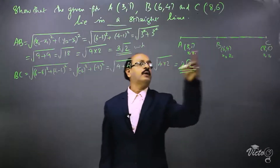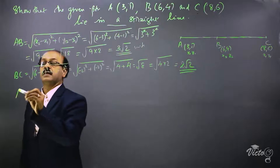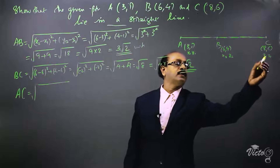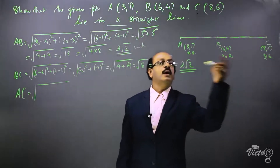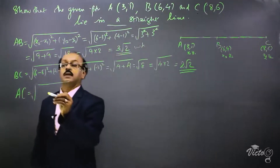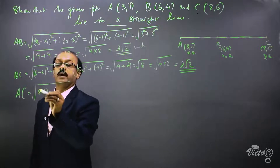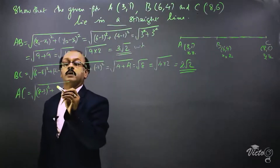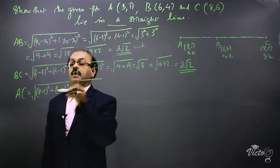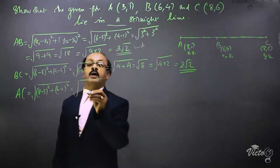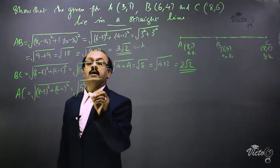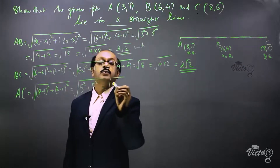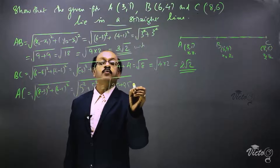Now find the length of AC. Taking A(3,1) as (x1, y1) and C(8,6) as (x2, y2): x2 − x1 = 8 − 3 = 5, and y2 − y1 = 6 − 1 = 5. So AC = √(5² + 5²) = √(25 + 25) = √50.